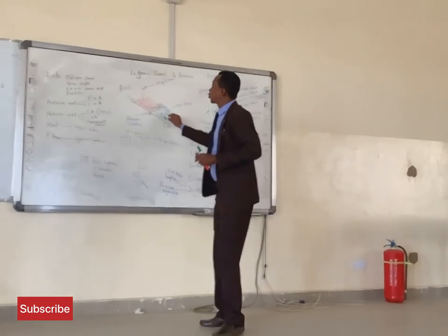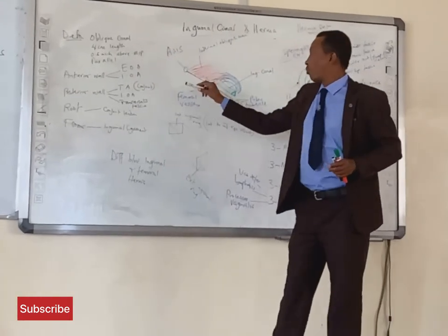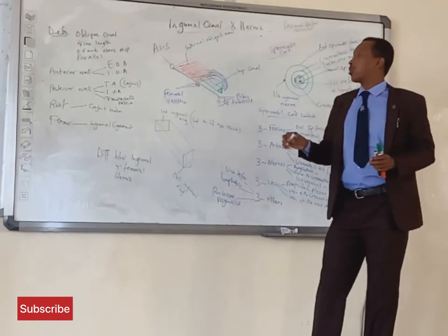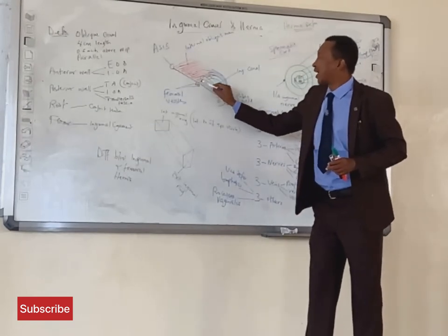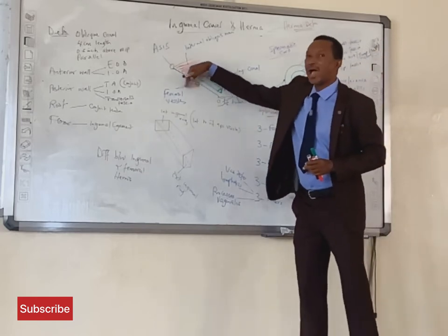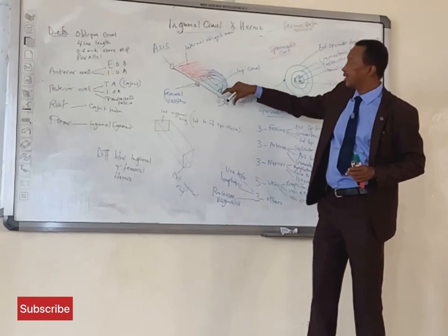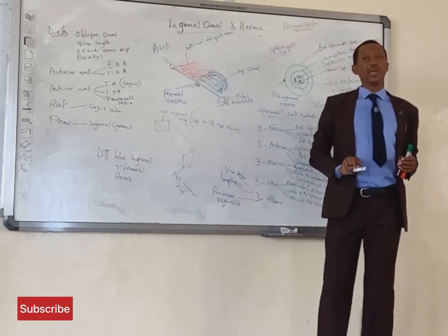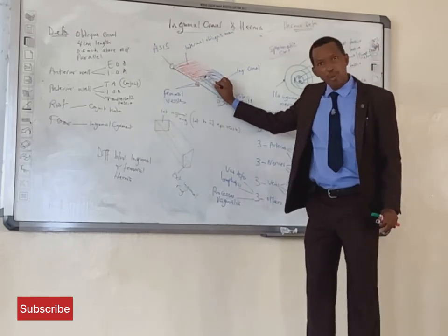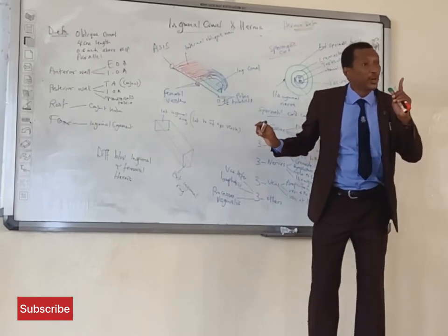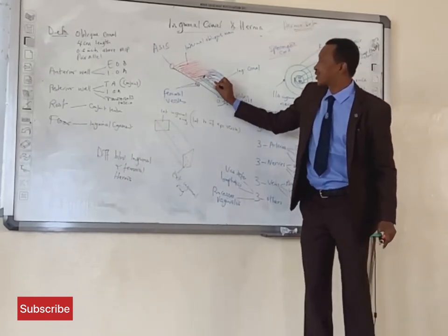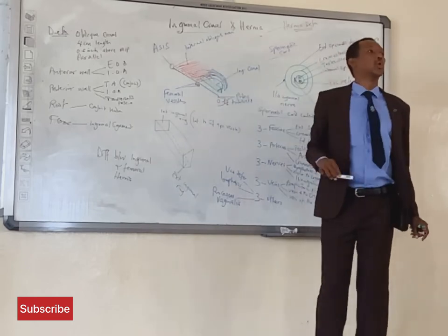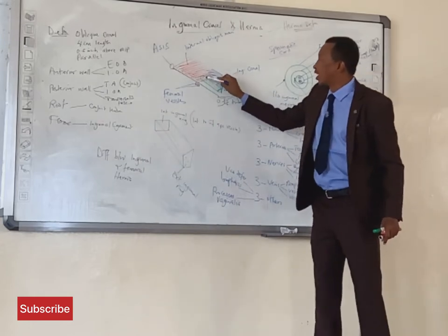The inguinal canal is an oblique canal passing obliquely downward, lying parallel to the medial half of the inguinal ligament. If you divide the inguinal ligament into a lateral half and a medial half, the inguinal canal lies above and parallel to this medial half. Specifically, the inguinal canal lies 0.5 inch above and parallel to the medial half of the inguinal ligament.